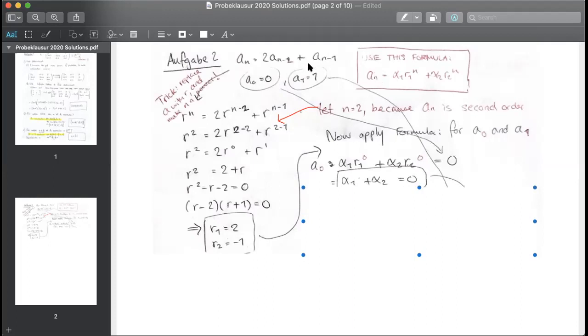Now you apply the formula for the second term they give you, a one. So for a one, that means n equals one. And you substitute that in the formula, you simplify. You get this. What's r one? r one is two. What's r two? r two is minus one. So it's two to the power of one and minus one to the power of one. And what does that equal? That equals one because that's what they said here. A one equals one.